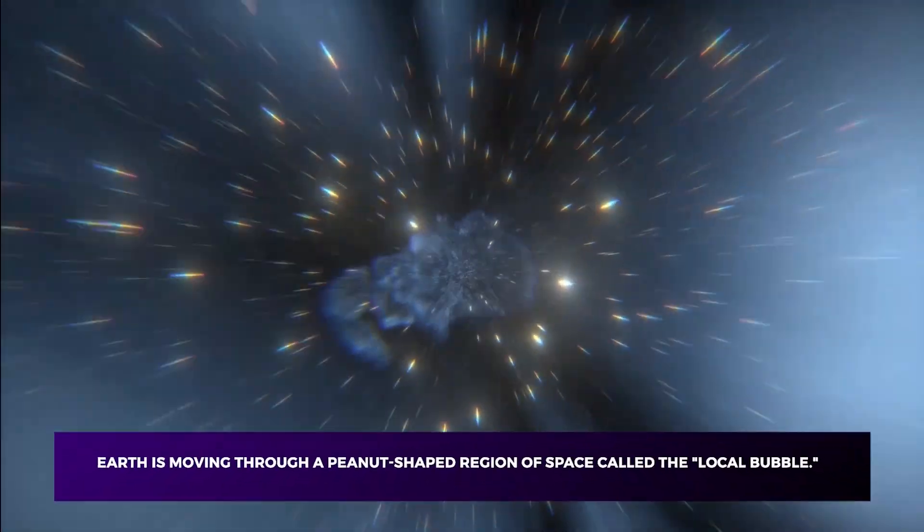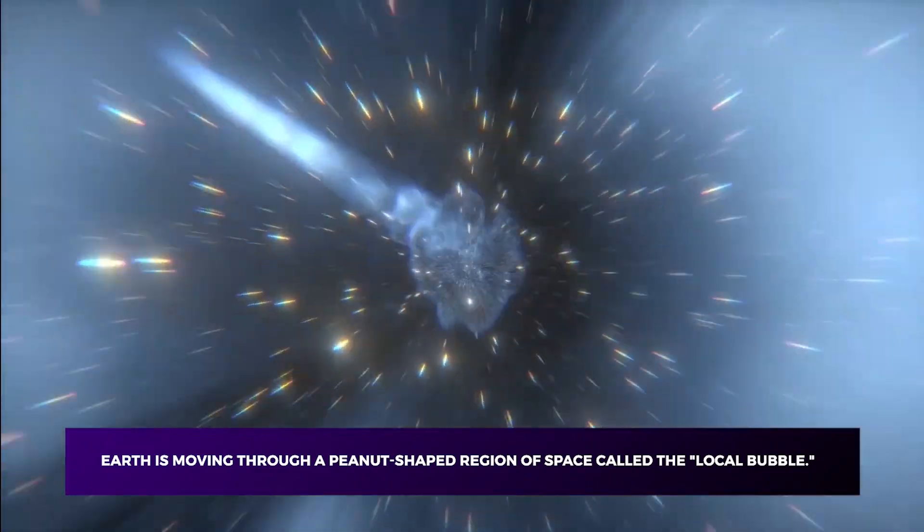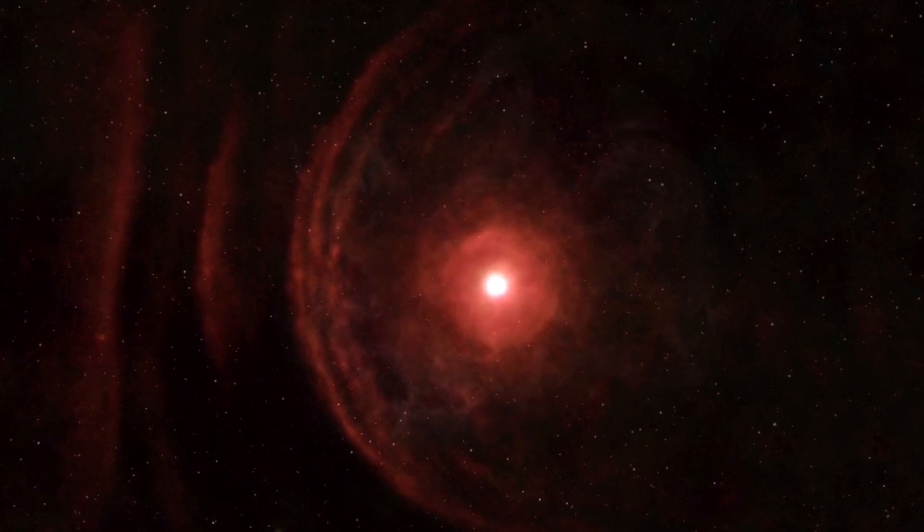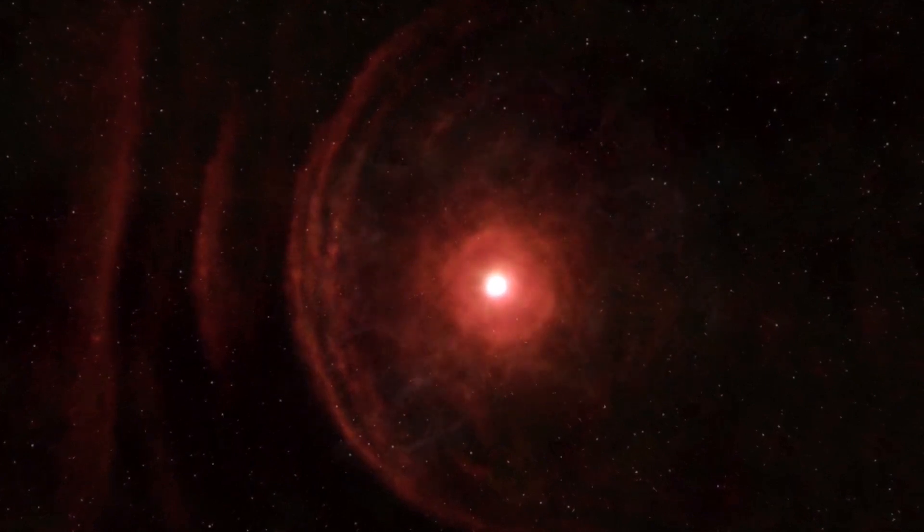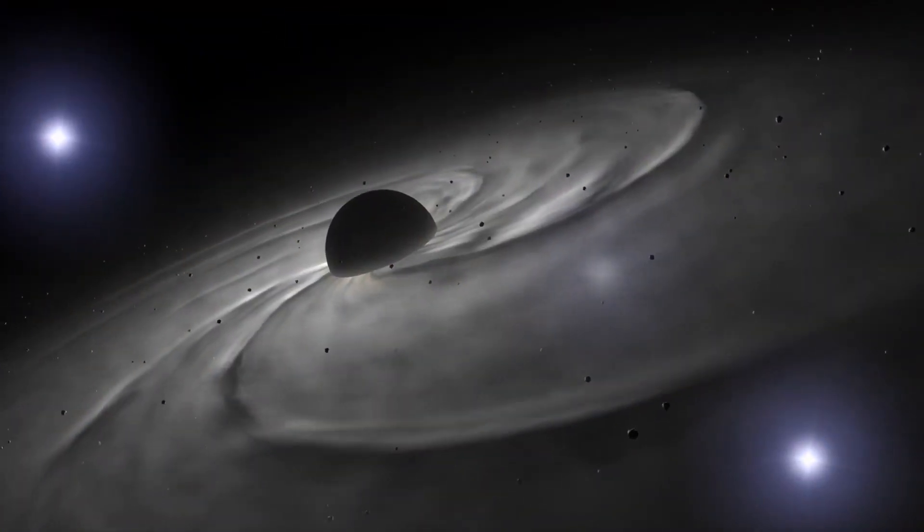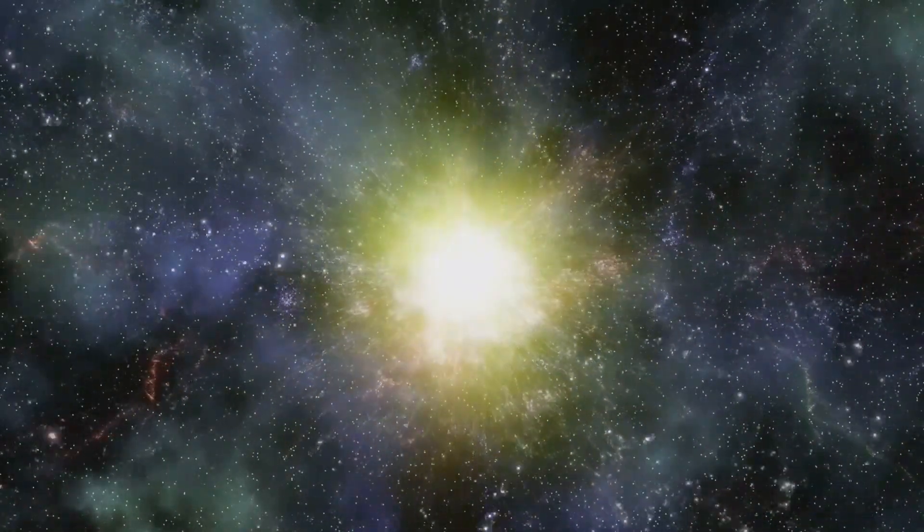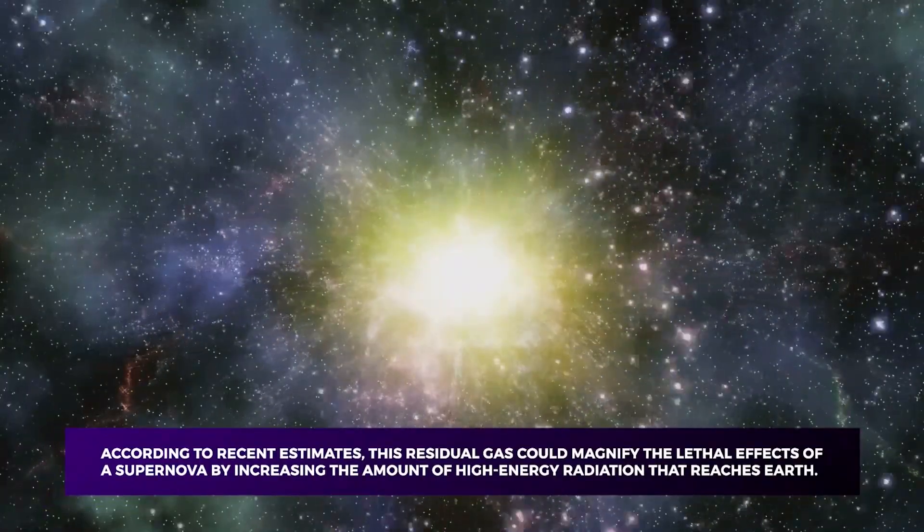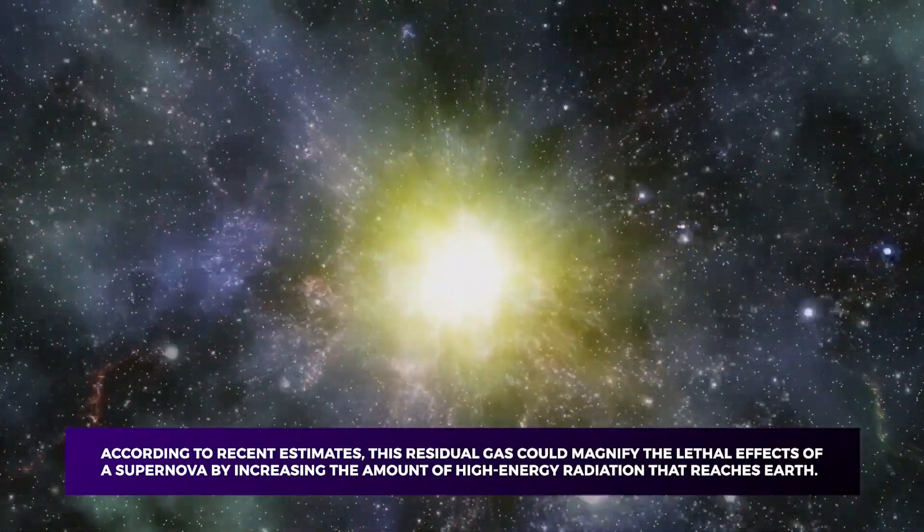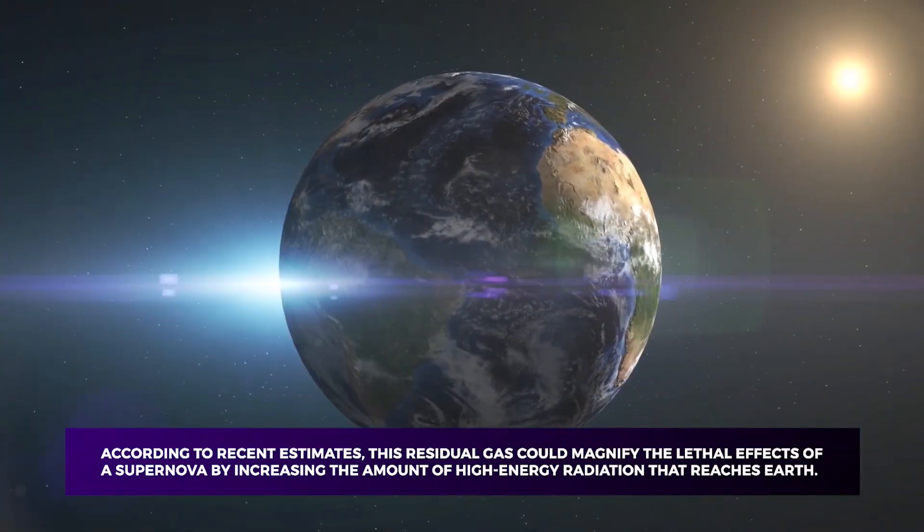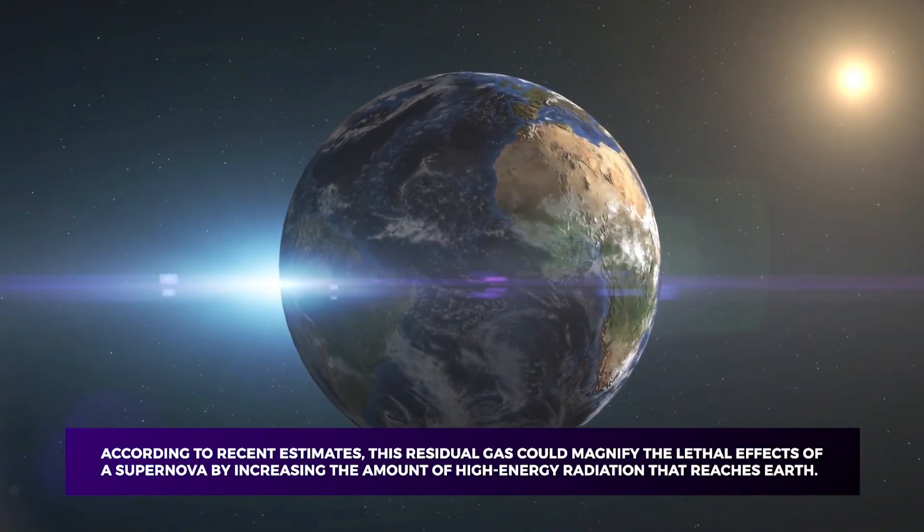Earth is moving through a peanut-shaped region of space called the Local Bubble. About 10 million years ago, astronomers think a neighborly cluster of stars went supernova, spewing their gaseous guts across the galaxy which created the Local Bubble. The Local Bubble is no cause for concern. Still, according to recent estimates, this residual gas could magnify the lethal effects of a supernova by increasing the amount of high-energy radiation that reaches Earth.